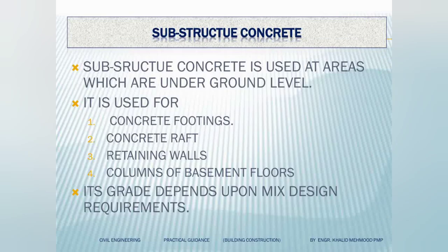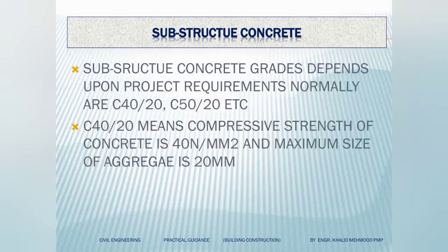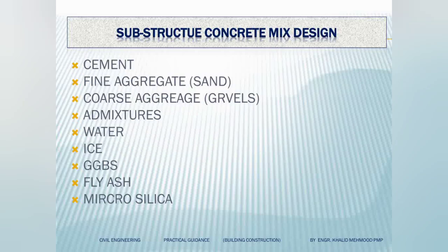Now, structural concrete. First is sub-structural concrete — the areas we use under the ground level. It is used for concrete footings, concrete raft, retaining walls, and columns. The grade depends upon your project requirement — normally C40/20 or C50/20. C40/20 means compressive strength is 40 and aggregate size is 20 mm.